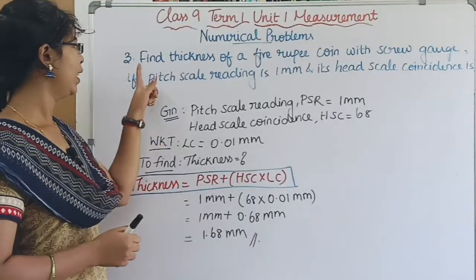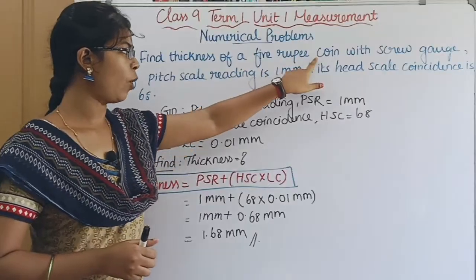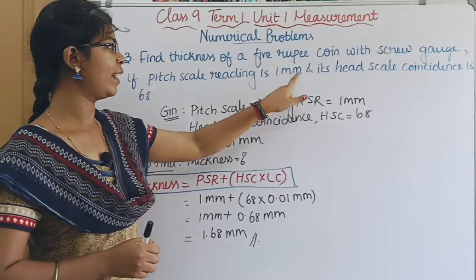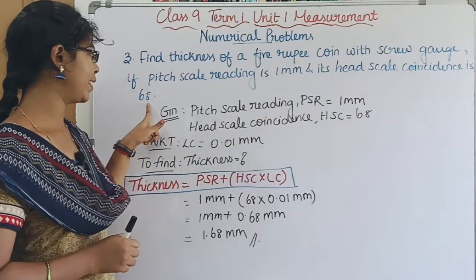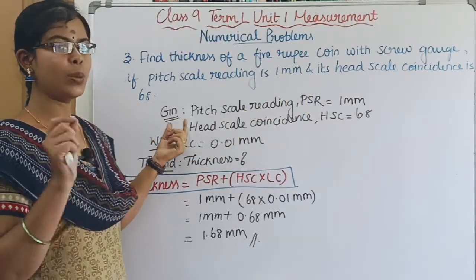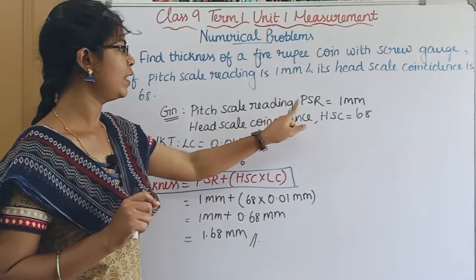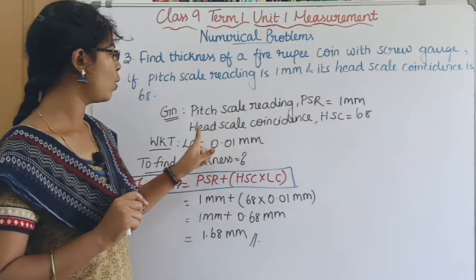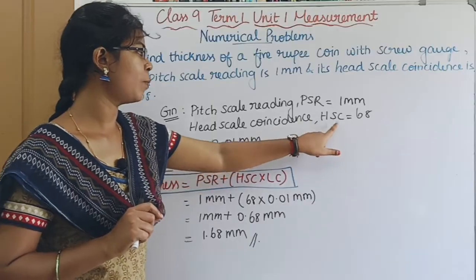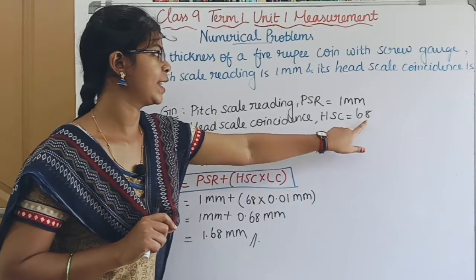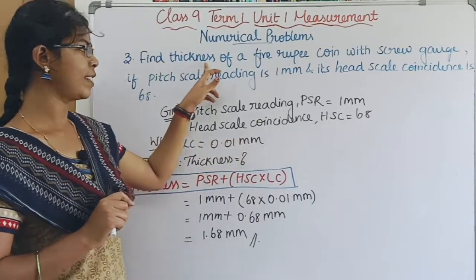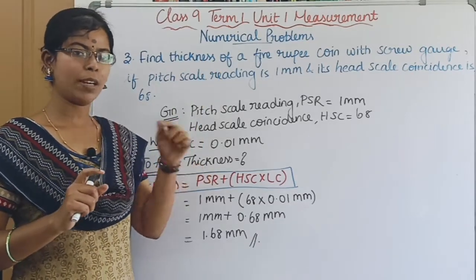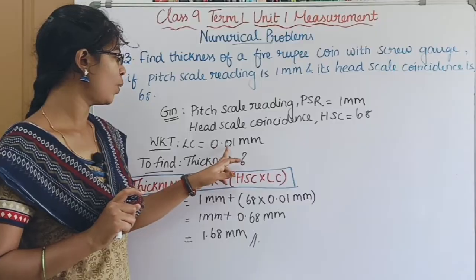Third problem: find the thickness of a 5 rupee coin using a screw gauge, where the pitch scale reading (PSR) is 1 mm and the head scale coincidence (HSC) is 68. The least count of the screw gauge is 0.01 mm.